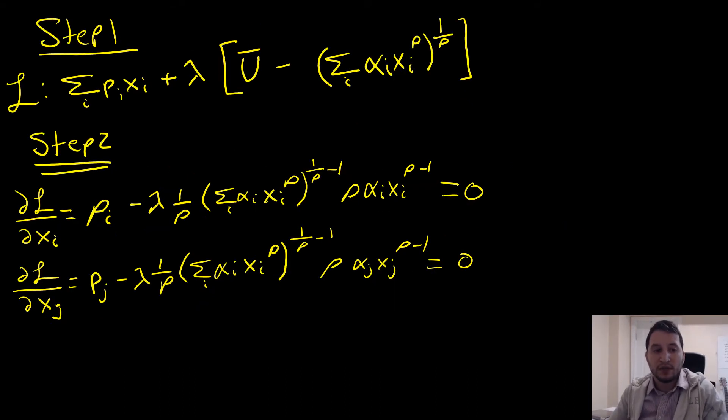So step number 1, we're just going to write our Lagrangian. This is just how it looks. Next, we're going to take our first order conditions which clean up real nicely because we have a 1 over rho here and a rho here and we have a 1 over rho here and a rho here. So that simplifies our equations there by a lot.